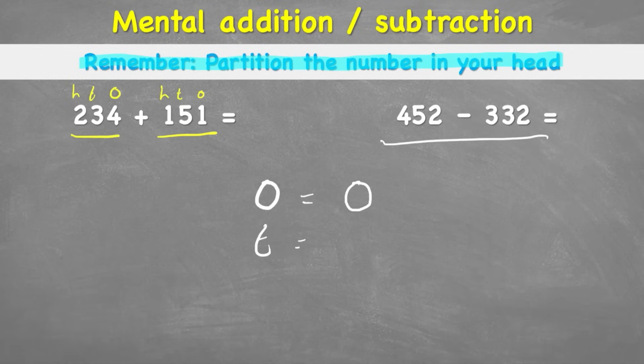My tens in 452 subtract 332. I have 5 tens subtract 3 tens. And that's going to equal 2 tens. And lastly, my hundreds, 400, subtract 300, is going to leave me with 100. So my answer is 120.